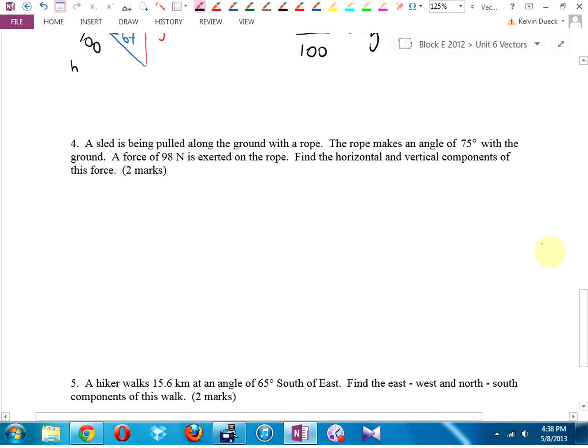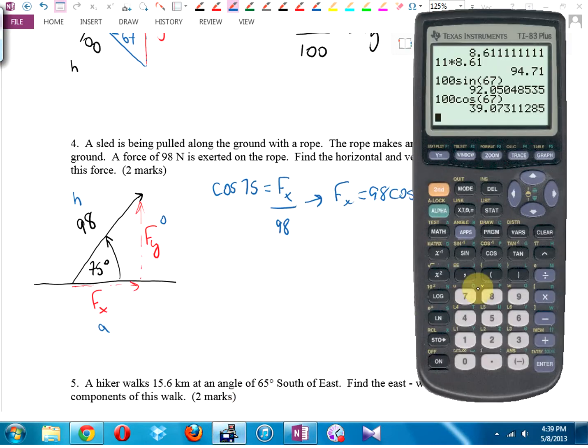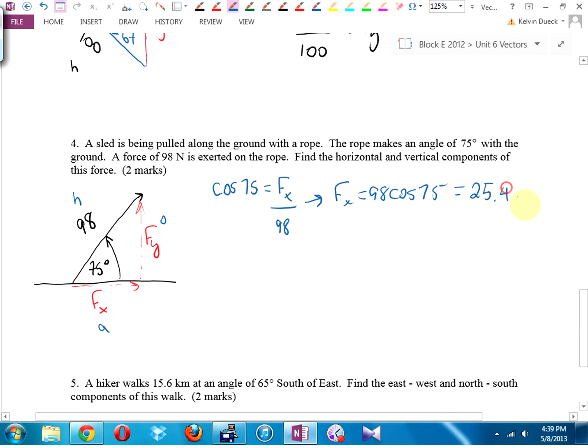A sled is being pulled along the ground with the rope. The rope makes an angle of 75 degrees with the ground. You know what? There's the ground. There's the rope. 75 degrees. A force of 98 newtons is exerted on the rope. So there's a force. Find the components. I think this time I'll find horizontal and vertical this way, where hypotenuse, opposite, adjacent. To find horizontal, it's going to be cosine this time. It's going to be cos of 75 equals adjacent over hypotenuse. Fx is going to be 98 cos 75. 98 cos 75. 25.4. And it's force, so it's newtons.